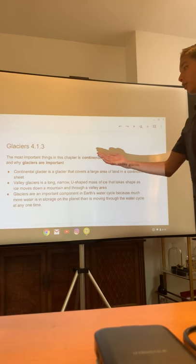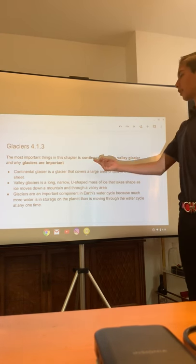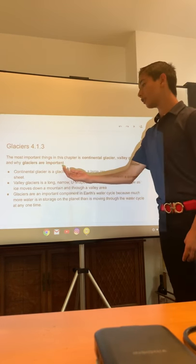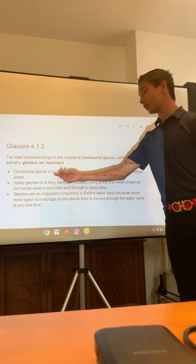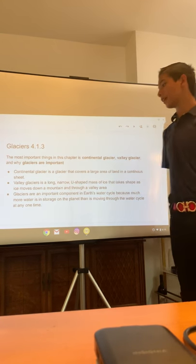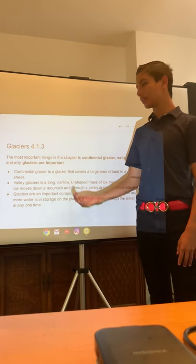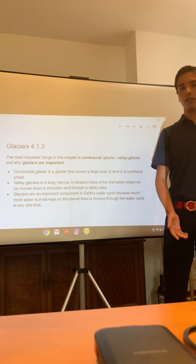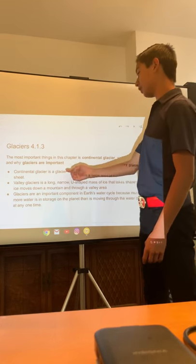The next slide is going to be about glaciers, 4.1.3. The most important things in this chapter are continental glacier, valley glacier, and why glaciers are so important to us. A continental glacier is a glacier that covers a large area of land in a continuous sheet — basically it's a large sheet of ice in the ocean traveling along the ocean.